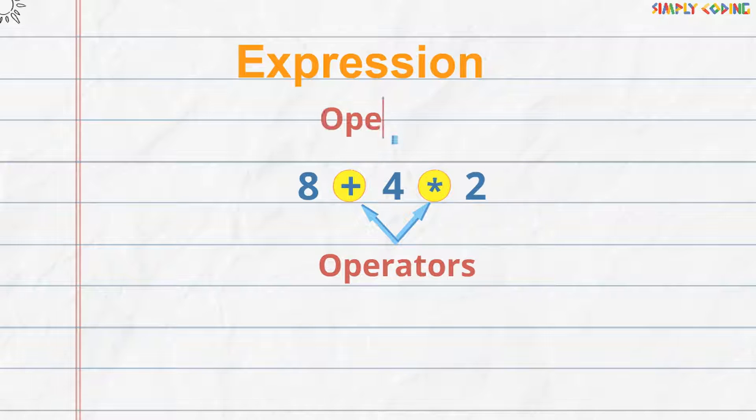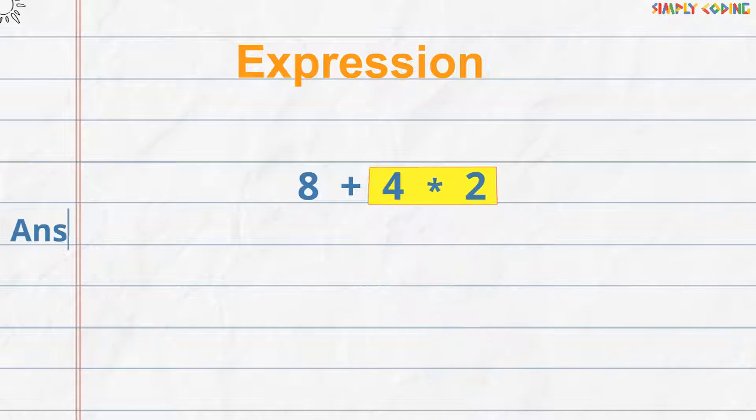Taking this expression as an example, will multiplication happen first or addition? When two operators share the same operand, the operator with higher precedence goes first. Here, multiplication has higher precedence, so it will happen first.